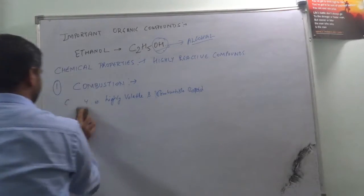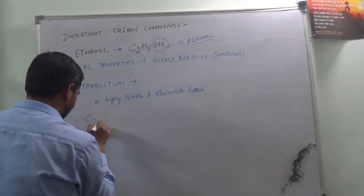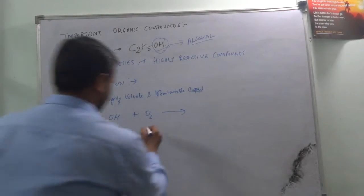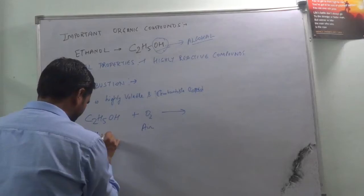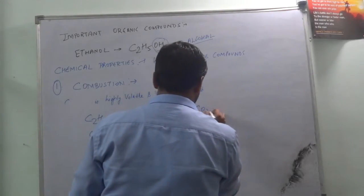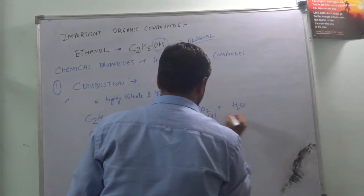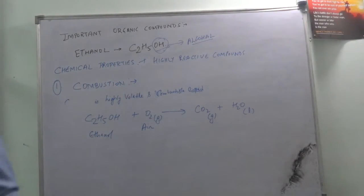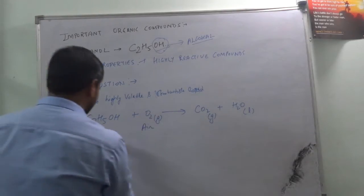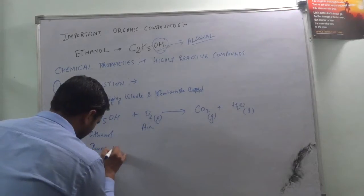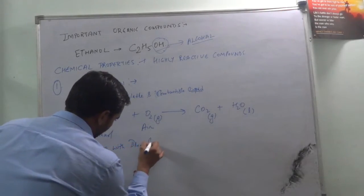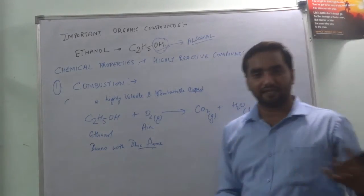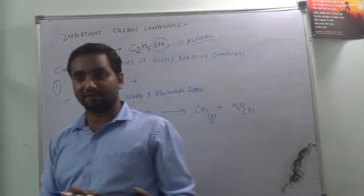We can write this equation as: C2H5OH reacted with oxygen from air produces carbon dioxide (in gaseous form) and water (in liquid form). No catalyst is required. It burns with a blue flame, and when a substance produces a blue flame, it shows that it is completely combustible.